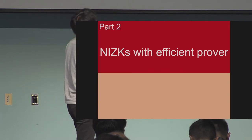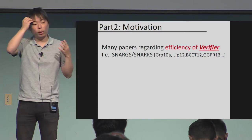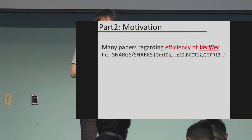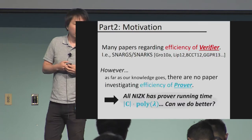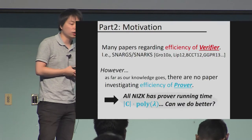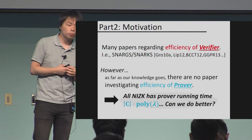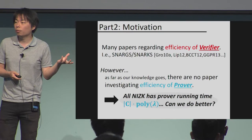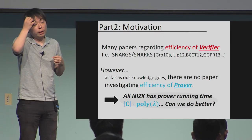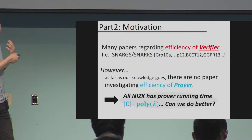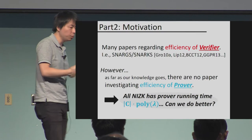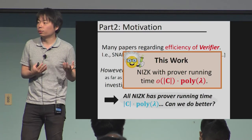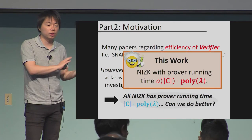The last section is about efficient provers — a completely different motivation. Many papers address efficiency of verifiers, as in SNARGs or SNARKs. But as far as we know, no paper has investigated efficiency of provers. All NIZKs have prover running time circuit-size times poly(λ), but since the prover can always just send the witness, it seems an overkill. The question: can we do better? We show yes — the prover running time can be made sublinear in circuit size times poly(λ).